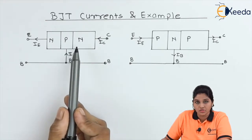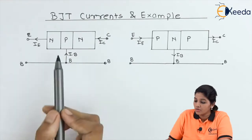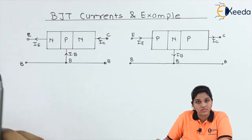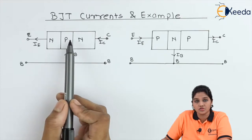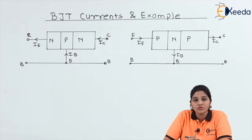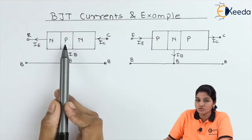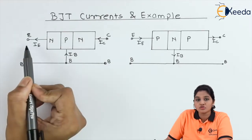In case of NPN transistor, the N region has majority carriers as electrons and the P region has majority carriers as holes. When the proper forward bias is applied between emitter and base, the electrons start moving from emitter to the base region, and this constitutes a current called emitter current IE. Since the flow of electrons is opposite to the direction of conventional current, the direction of emitter current is from base to emitter.